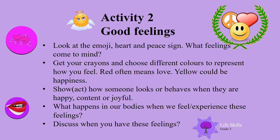Activity two: Good Feelings. Look at the emoji, heart, and peace sign — what feelings come to mind? Get your crayons and colors and choose different colors to represent how we feel. Red often means love, yellow could be happiness. Show how someone looks or behaves when they are happy, content, or joyful. What happens in our bodies when we experience these feelings? Discuss when you have these feelings.